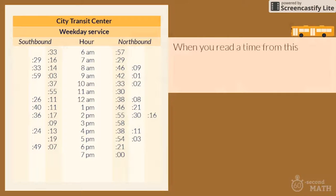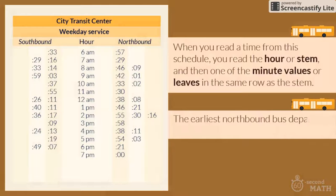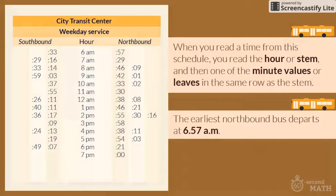When you read a time from this schedule, you read the hour, or stem, and then one of the minute values, or leaves, in the same row as the stem. For example, the earliest northbound bus departs at 6:57 a.m.